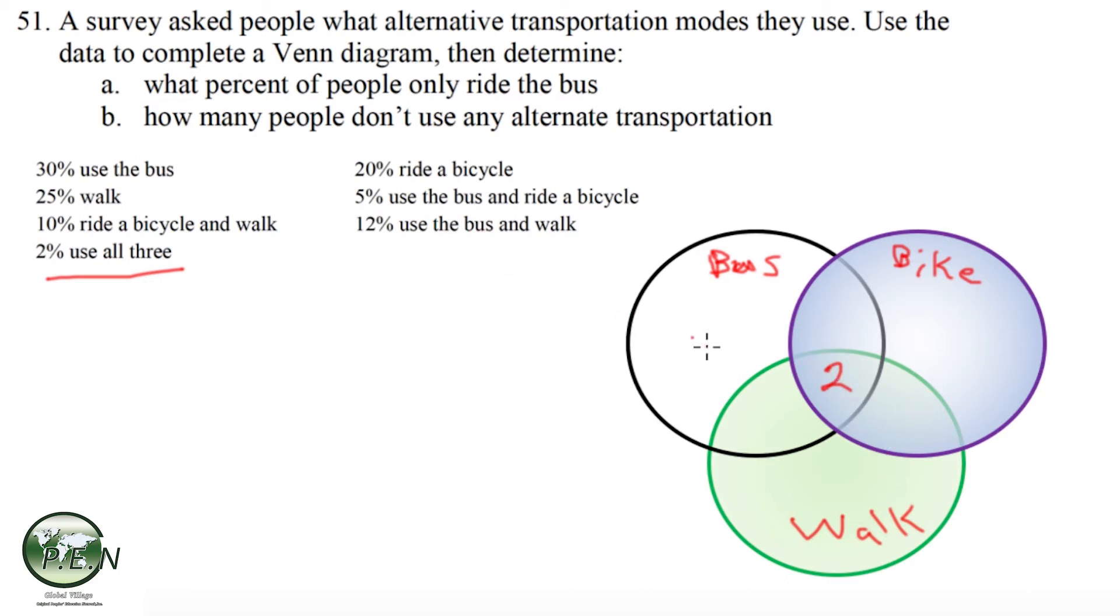Then we start filling in the regions that have two modes of transportation. Ride a bike and walk, there's 10% or 10 people. But notice we've already accounted for 2 of those people. So the 10 that goes in this whole region has to get broken up between the 2 and the 8. So we took 10 minus 2 and got 8.